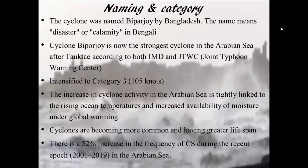By now, all of you are well aware of Cyclone Biparjoy. Let us see certain facts about this cyclone — first, the naming and the category. This name has been given by Bangladesh, and it means disaster or calamity in the Bengali language. According to IMD and the Joint Typhoon Warning Centre, Biparjoy is now the strongest cyclone in the Arabian Sea after Cyclone Tokte.